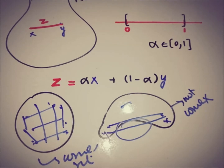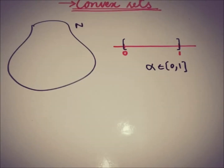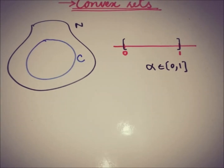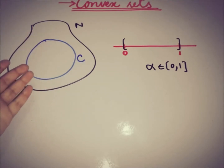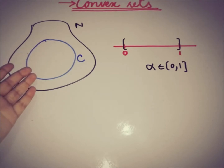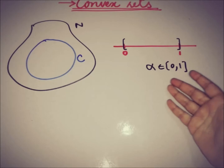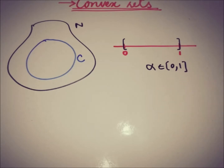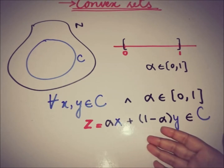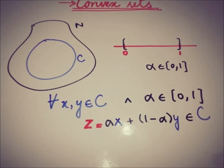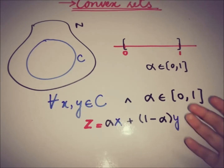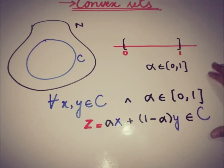Now I'm moving toward the formal definition of a convex set. If C is a subset of the linear space N, then C is said to be convex if and only if for all elements taken from C — if we take any two random elements x and y from the subset C and a scalar alpha from the interval zero to one — the element alpha x plus one minus alpha times y must also be an element of C. If this condition holds for every two elements of set C, then we can say C is a convex set.